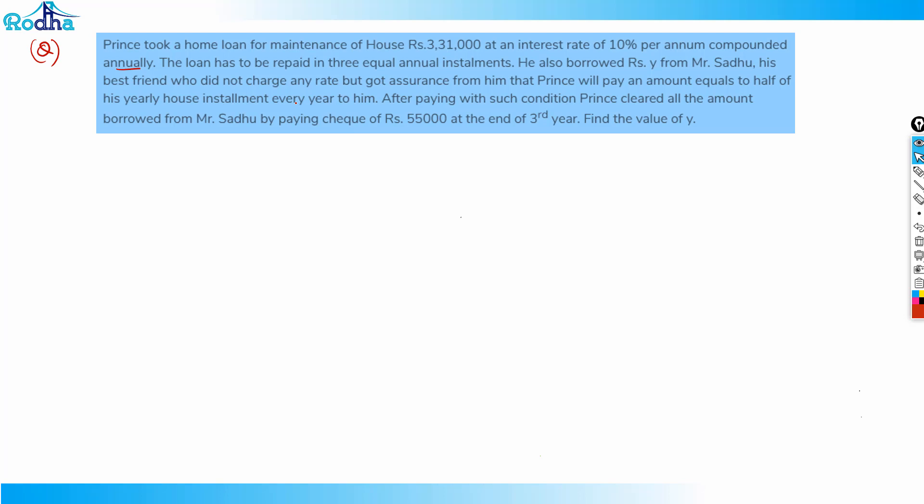He also borrowed rupees Y from Mr. Sadhu, his best friend, who did not charge any interest rate but got assurance that Prince will pay an amount equal to half of his yearly house installment every year. After paying under such conditions, Prince cleared all the amount borrowed from Mr. Sadhu by paying rupees 55,000 at the end of the third year. Find the value of Y.